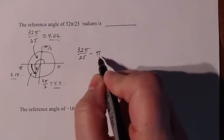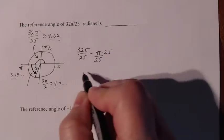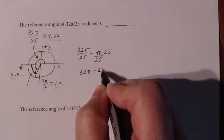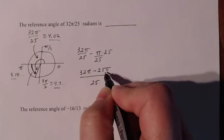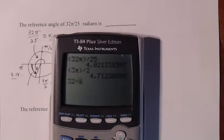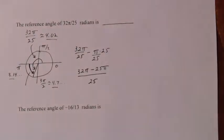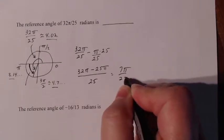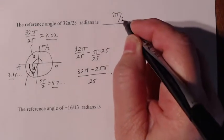I need a denominator of 25 on both terms, so I multiply π by 25 over 25. That gives me 32π minus 25π, all divided by 25. I just do 32 minus 25, which tells me how many π's I have — that leaves me with 7. So this gives me 7π over 25, and that's my reference angle.